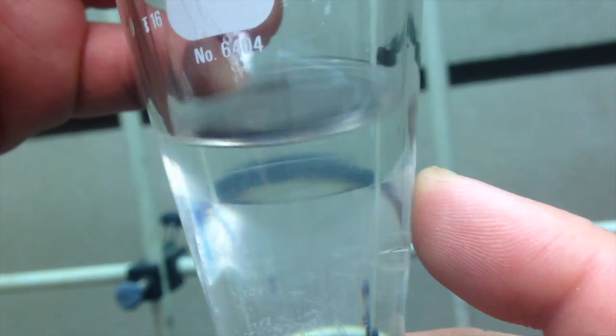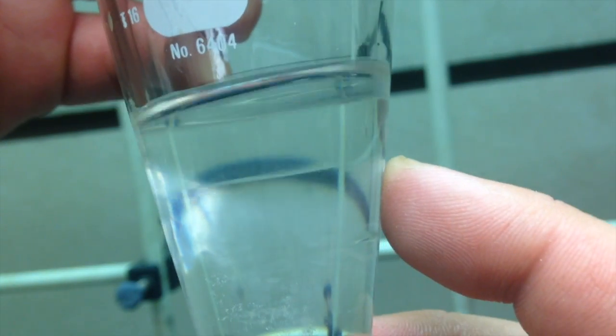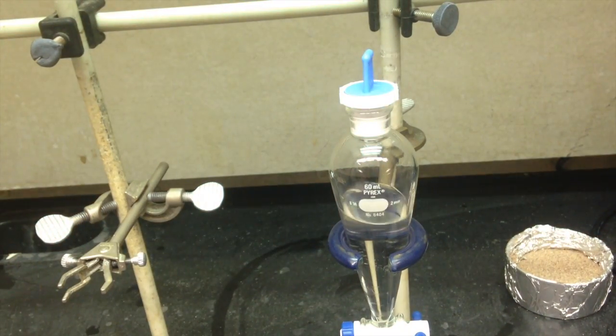Now, I got this nice clear extraction, but I cheated. Ultimately, this reaction almost always gives an emulsion. Basically, you create a white chemical mayonnaise inside your separatory funnel. To get rid of this, add a little bit more water, a little bit more ether, shake again.